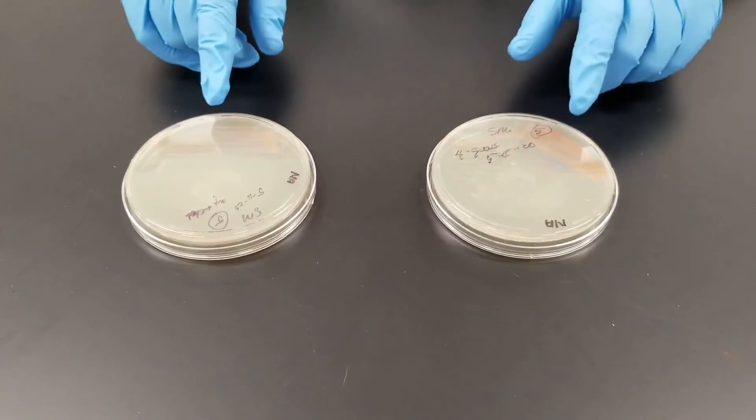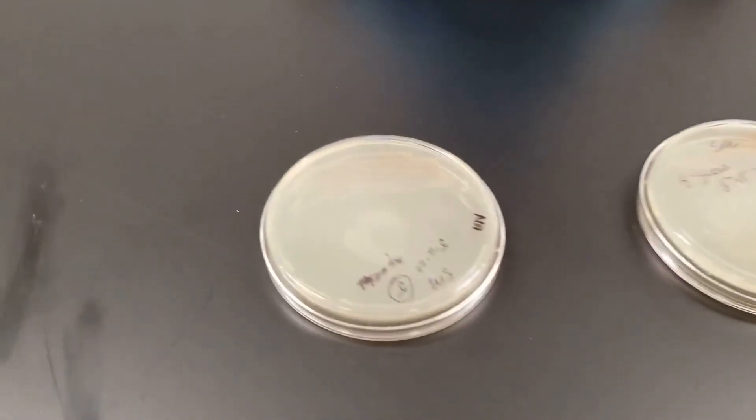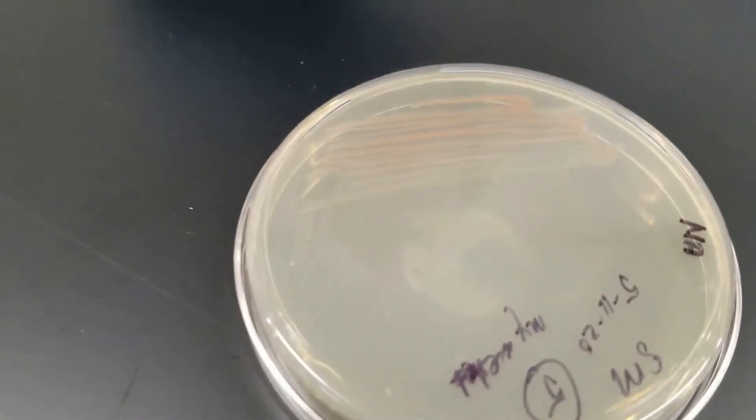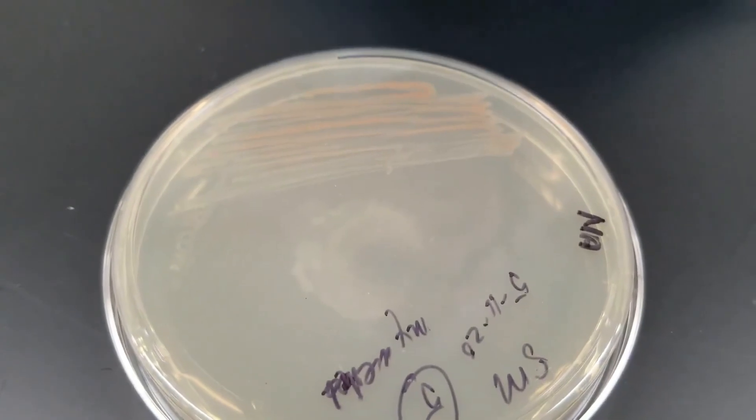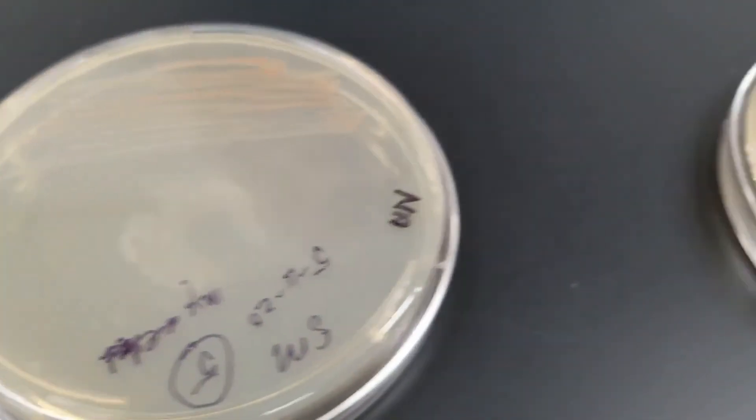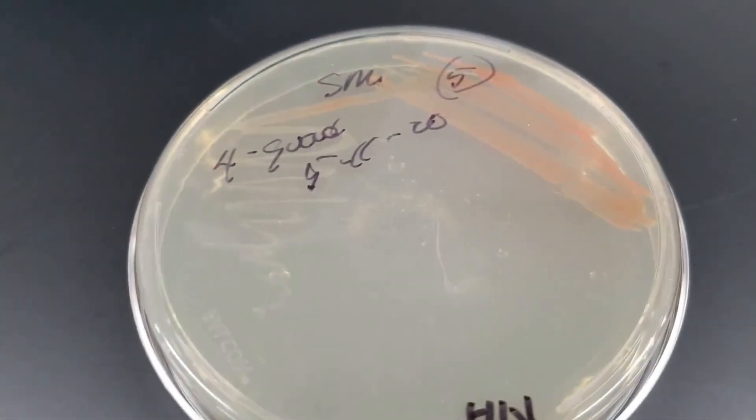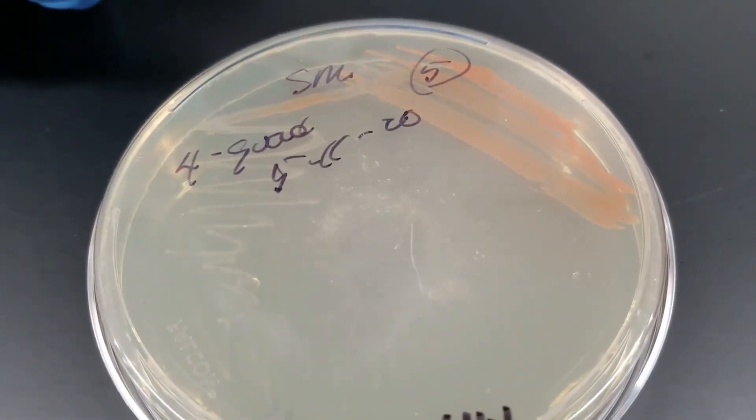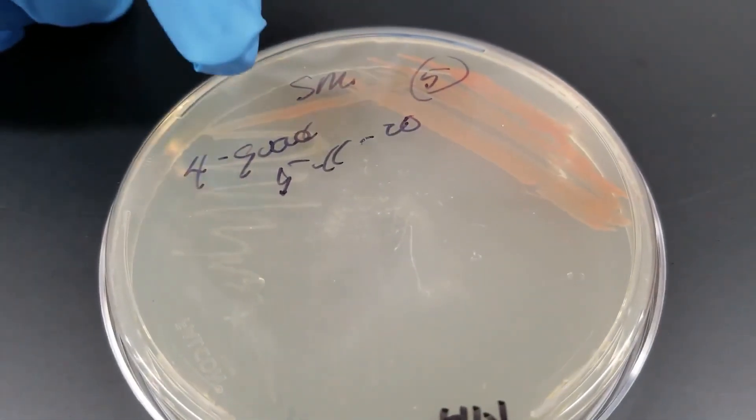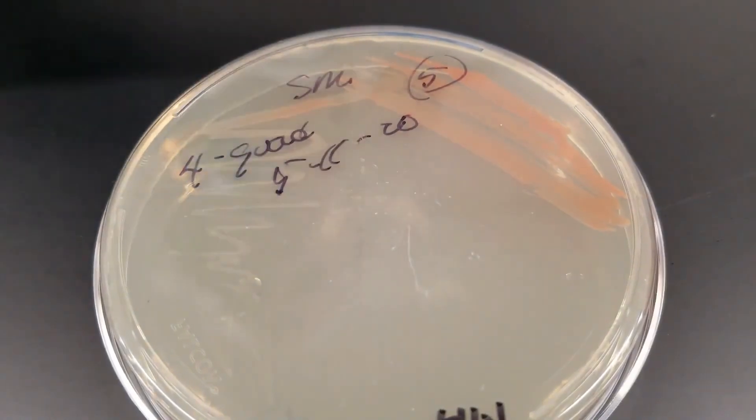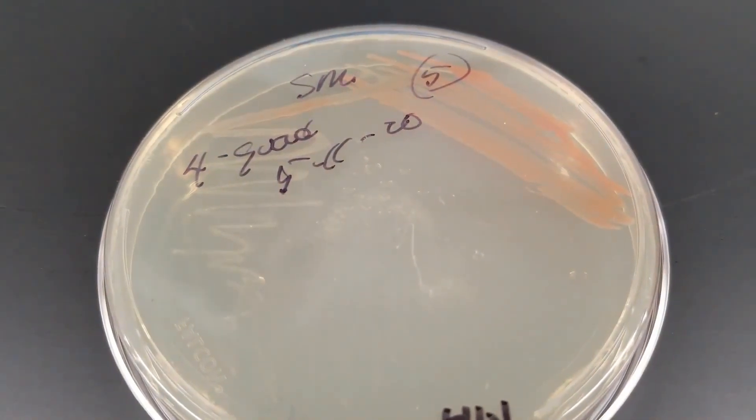On both of these plates, you can see where initially, where we started the streak, you have very heavy growth in here, and then the idea is you are spreading it out, you're diluting it out. And so as you follow the streak down, towards the end then is where we have individual colonies.